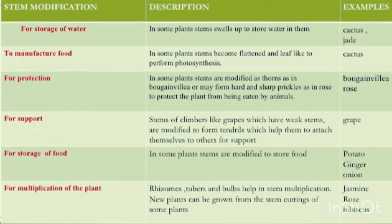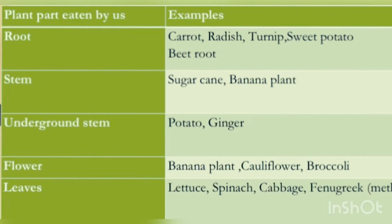Next modification: For multiplication of the plant. Rhizomes, tubers and bulbs help in stem multiplication. New plants can be grown from the stem cuttings of some plants. Examples: Jasmine, Rose and Hibiscus.